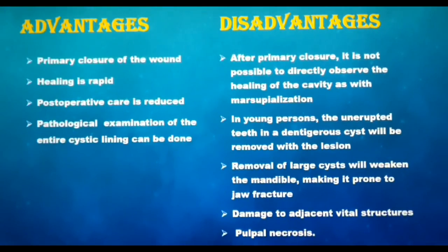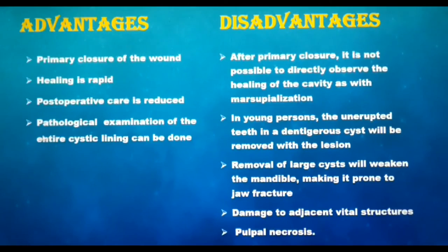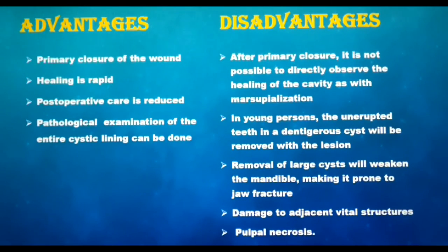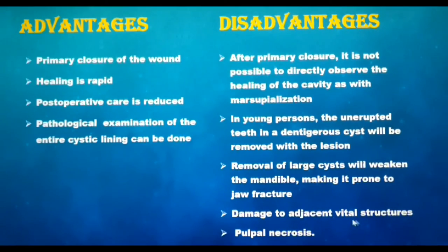Advantages of enucleation include that it enables primary closure, assisting in rapid healing of the cavity, postoperative maintenance is not as difficult as in marsupialization, and pathological examination of the entire cystic lining can be performed since the lining is completely excised. Disadvantages are that after primary closure we cannot observe healing of the cavity, unerupted teeth in a dentigerous cyst will be removed with the lesion affecting dentition, removal of large cysts weakens the mandible making it prone to jaw fractures, and there is high risk of damage to adjacent vital structures and pulpal necrosis.